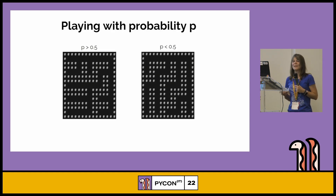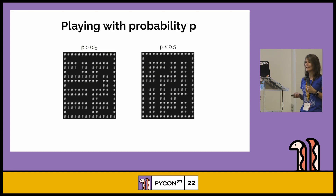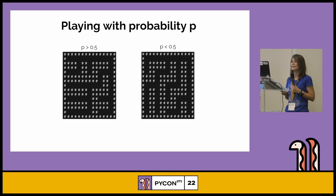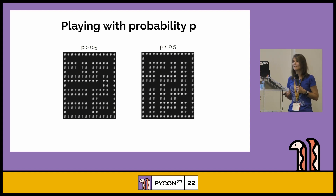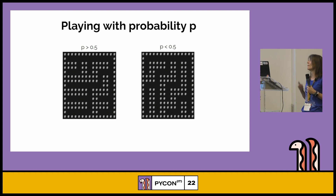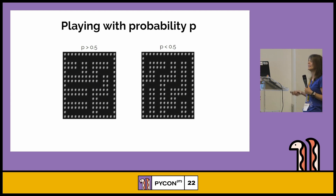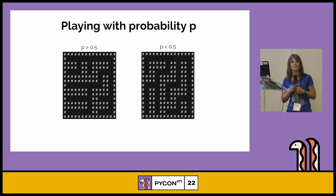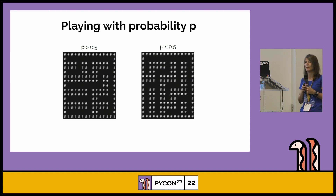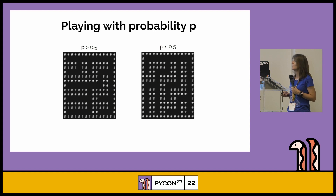If we play with probabilities, when p is greater than 0.5 we're going to have a majority of horizontal corridors, and otherwise a majority of vertical corridors. This is a direct consequence of how the carving works with this kind of algorithm.